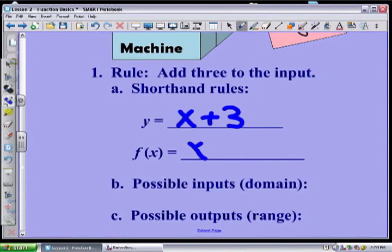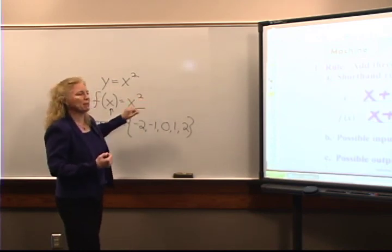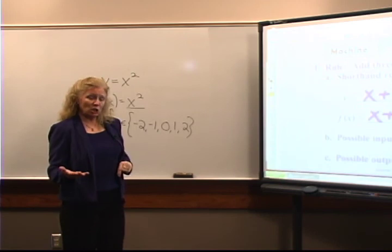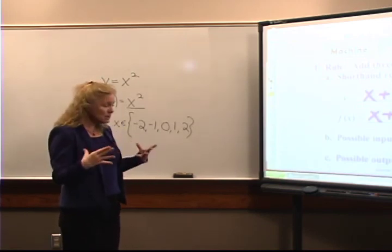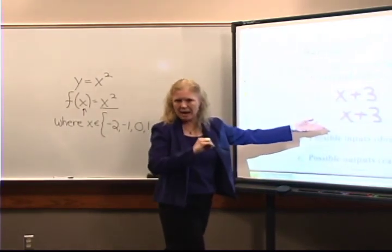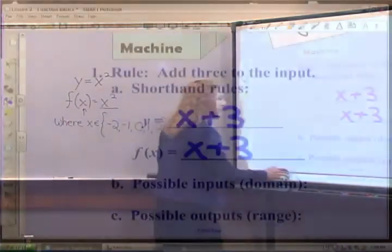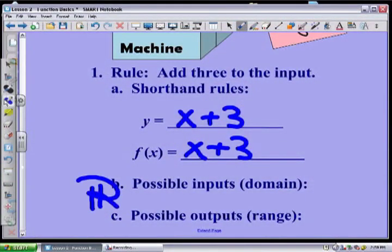We can use the y as that output, or we can use f of x as that output. If I choose to use f of x, I really like using that function notation because it makes it really clear that this is my input. Now just like the pop machine, what are my possible inputs? The domain — you look at your function and ask what kinds of numbers can I take and add three to. Pretty much all of them.